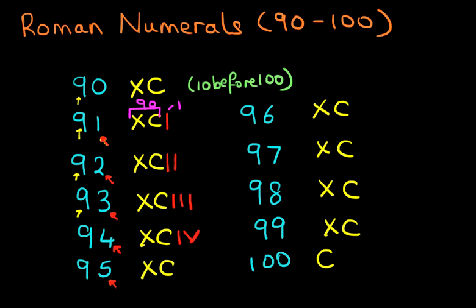What about 95? Well, that is simply XCV. And moving across, we now look at 96. So how do we write six down? Well, six is V, that's five, plus one is six. So 96 is XCVI.